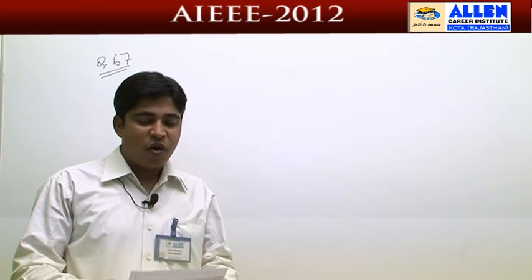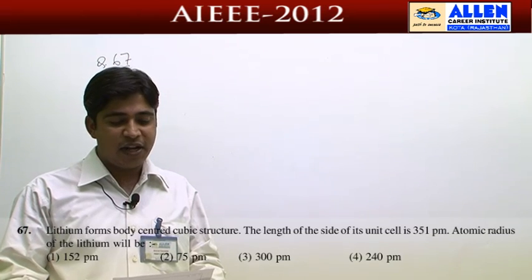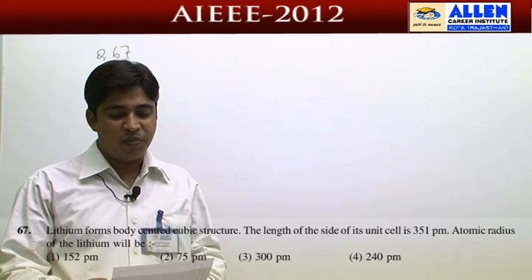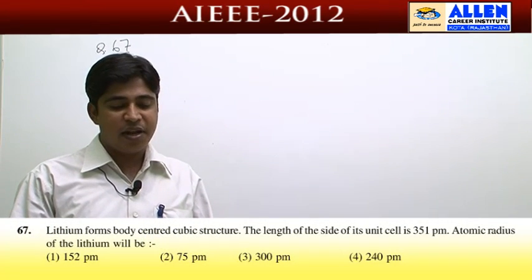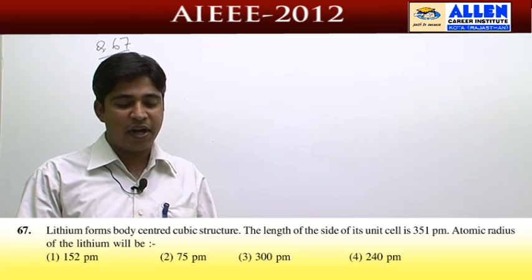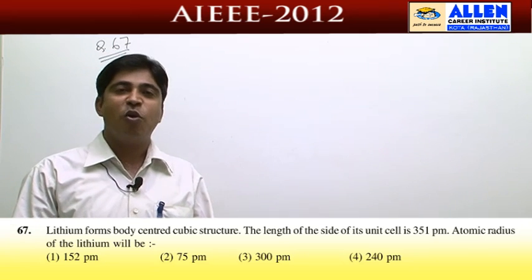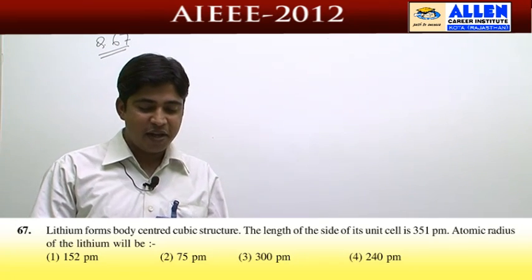Question number 67. Lithium forms a body-centered cubic structure. The edge length of the side of its unit cell is 351 picometers. The atomic radius of lithium — this is a very easy question from solid state.